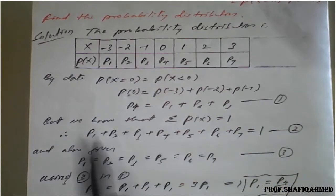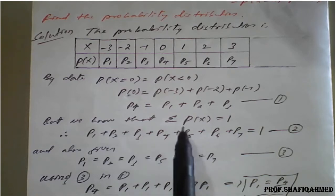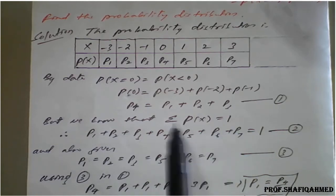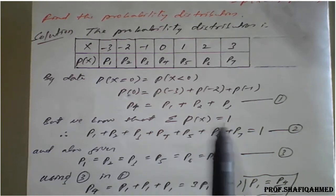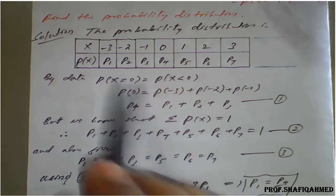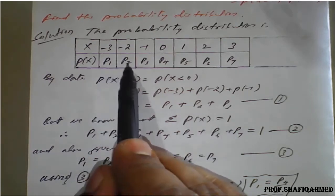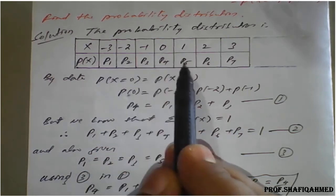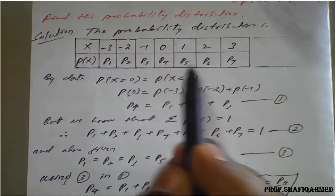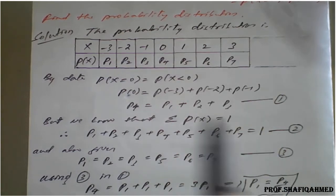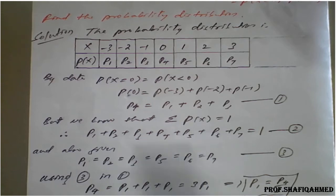We know that the summation of all P of X equals 1. So P1 plus P2 plus P3 plus P4 plus P5 plus P6 plus P7 equals 1. Call this equation number 2.